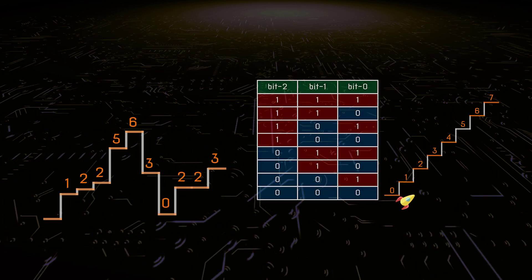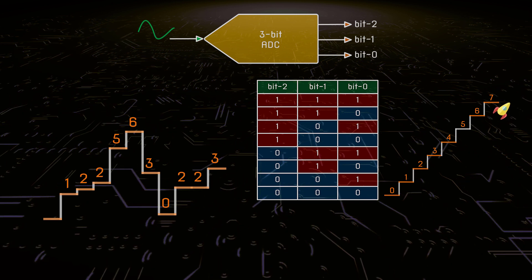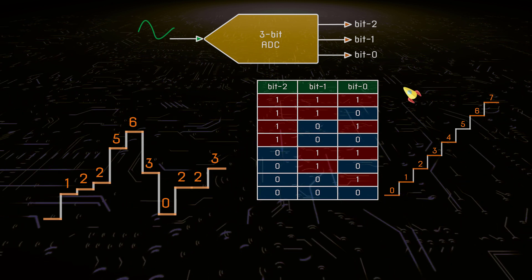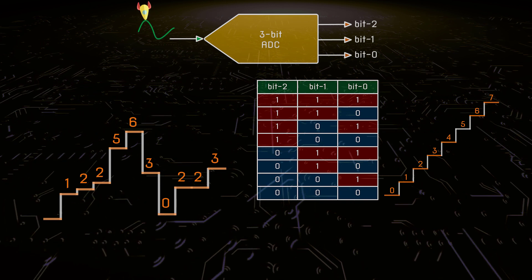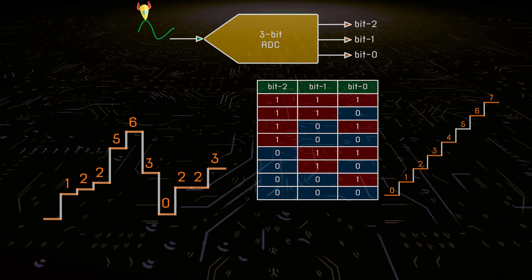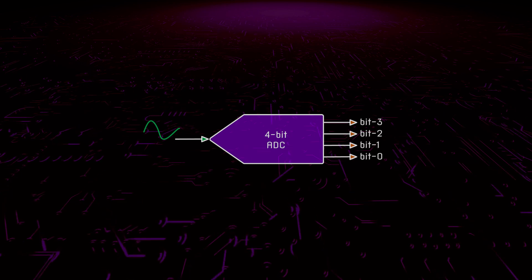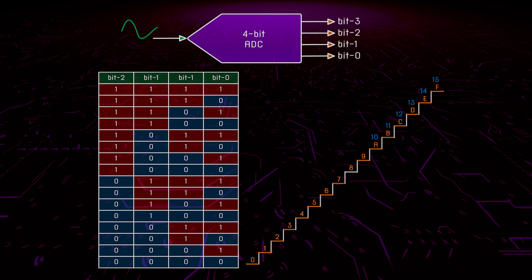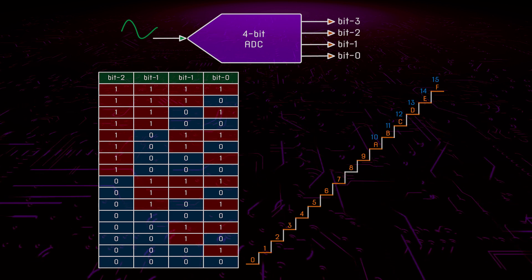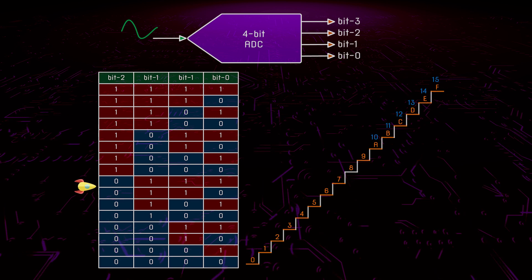000 represents the minimum value and 111 represents the maximum value. The minimum value can be 0V and the maximum value can be 3.3V. Now let's take the bigger one — the 4-bit ADC. Its output is composed of 16 steps, starting from 0000 to 1111. In the digital world, values 10 to 15 are represented by A to F.